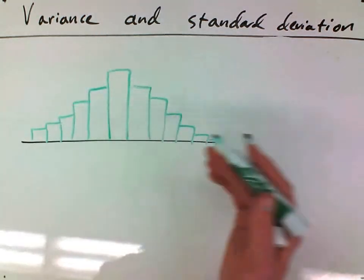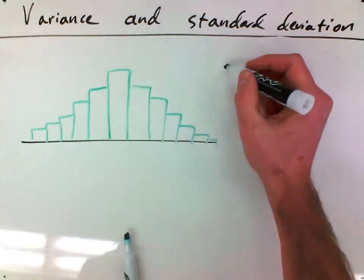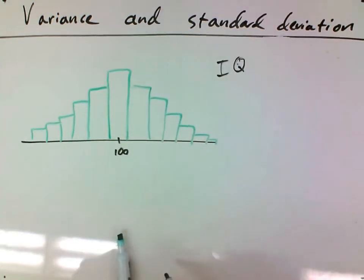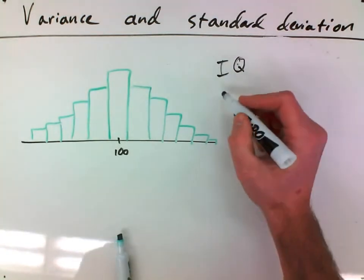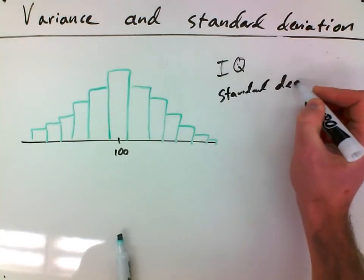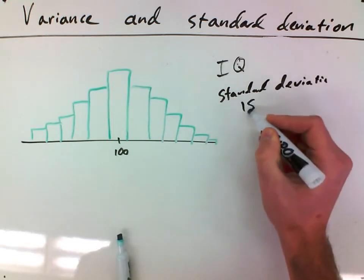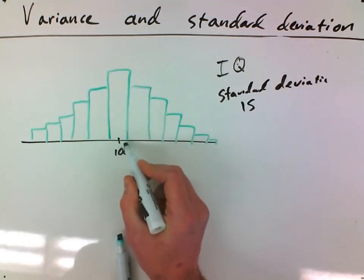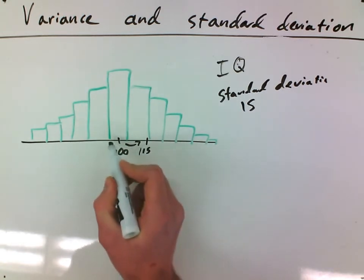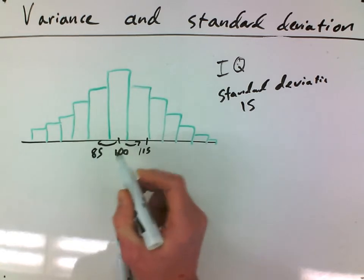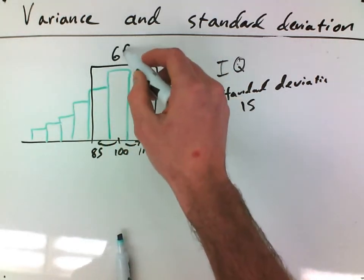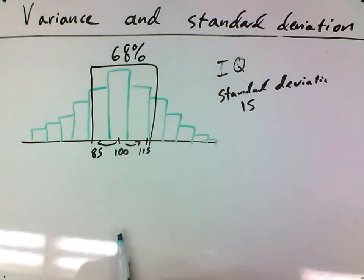This is what's called a normal curve. If we have a normal curve for IQ, the middle score for IQ is 100. That's how they set up the test. Here's the thing, the standard deviation is 15. So that means if I go 15 up to 115 and I go 15 down to 85, in between those two numbers, that's where 68% of the data lies.